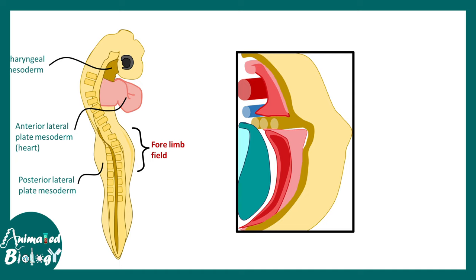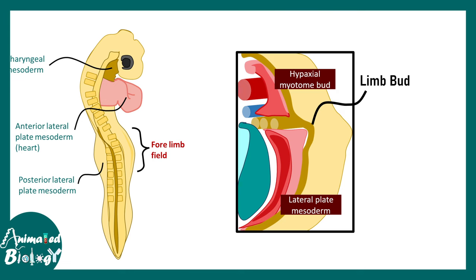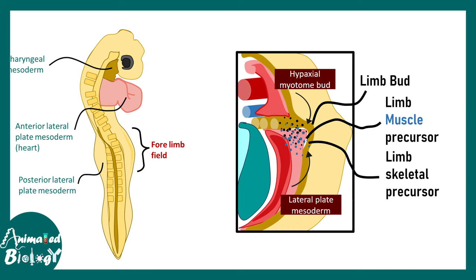If we zoom in and cut a cross section of this embryo, we can see different zones. This bud would eventually grow, and two mechanisms can operate: extensive proliferation and migration of nearby cells to that region. It turns out that underneath the limb bud, migration of cells happens from the myotome, hypaxial dermomyotome, and lateral plate mesoderm. These limb and muscle precursor cells populate underneath the limb bud.